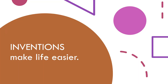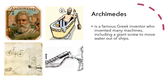Inventions make life easier. Archimedes was one of the most important inventors. He was Greek and he invented many machines, including a giant screw, like the one you can see in this picture, to move water out of ships.